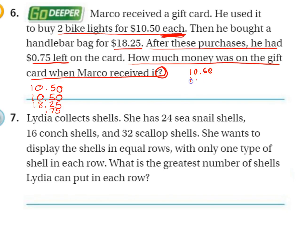So $10.50 plus another $10.50 plus $18.25 plus the 75 cents he had left. We can bring our decimals straight down and add those up. I'm going to let you do that math, so I'll be able to look at this problem and see if you're actually following along — because if you are, you'll have that problem solved. If you're not actually listening and following along, you're just going to have a blank circle here.